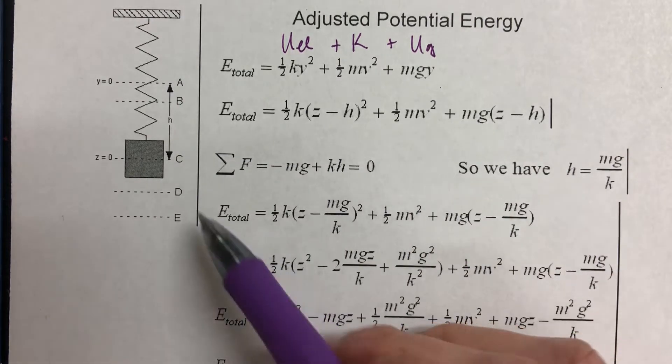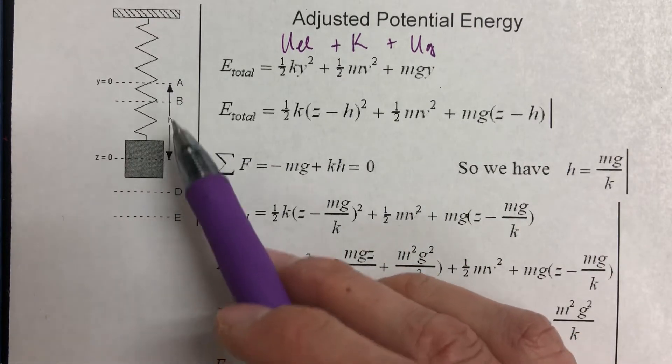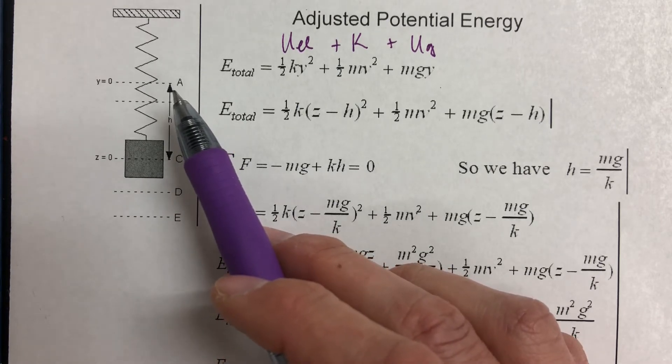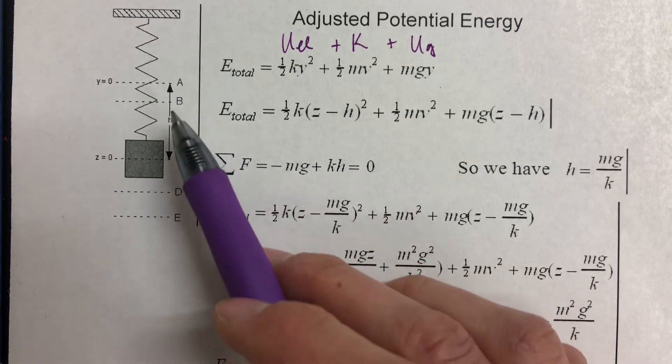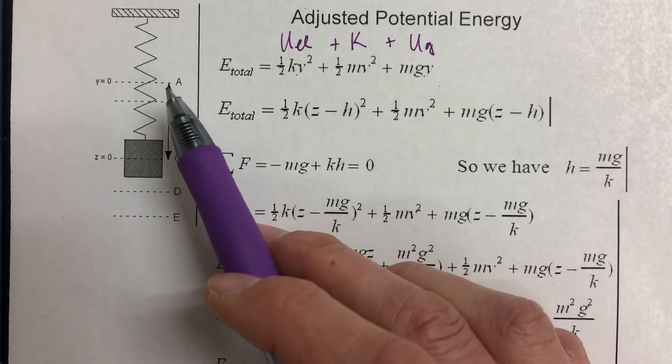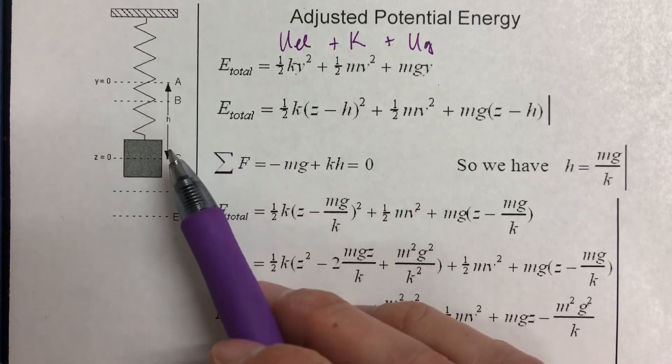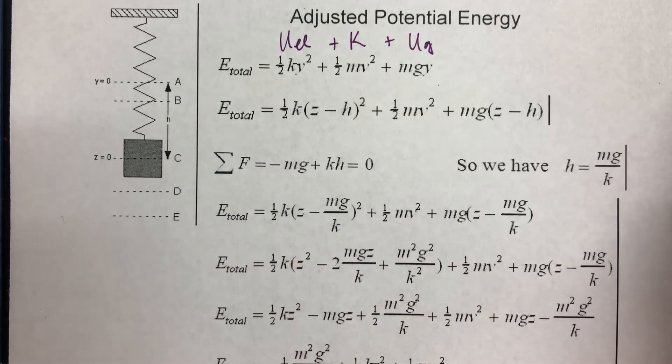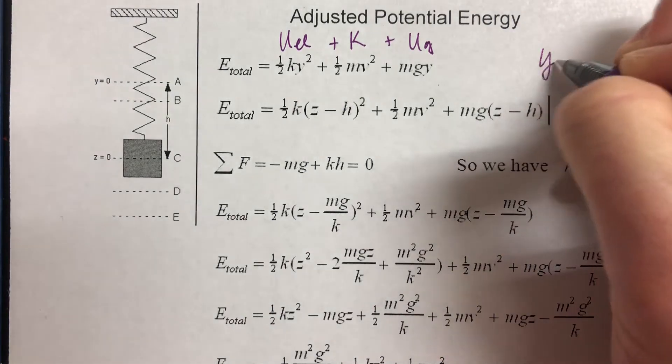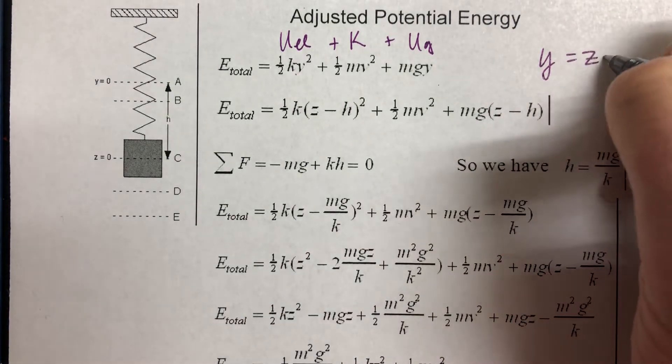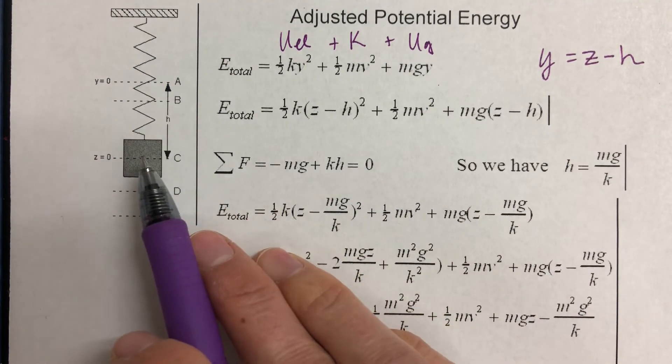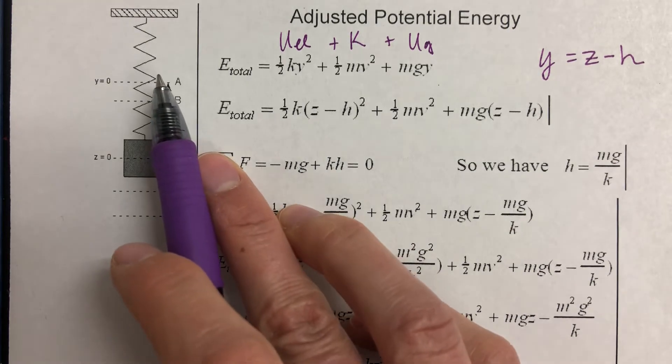If we look at y and z, they are related by this term h, which is basically just the distance between y and z. So the distance between the spring's equilibrium position when there's nothing on it, and the equilibrium position of the spring mass system. So I can write an equation, which is y equals z minus h. Because y's position is going to be z, and then you subtract h from that to get y.